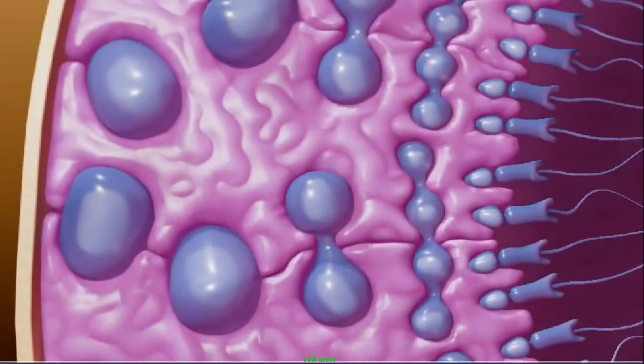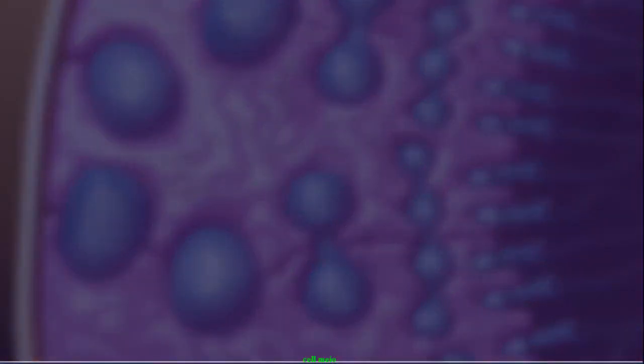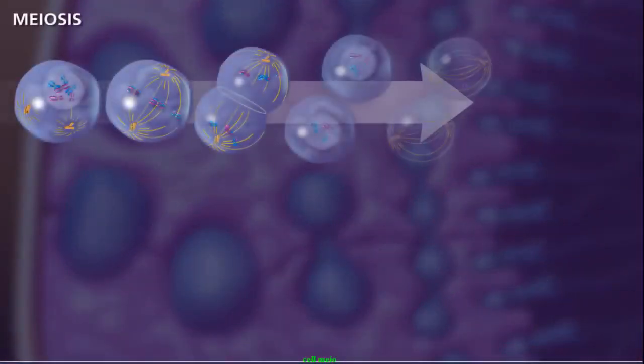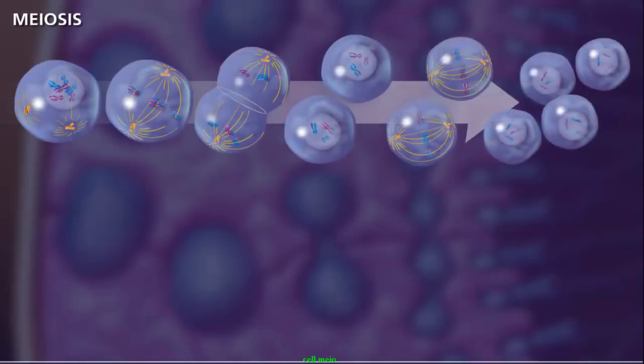Meiosis occurs in special cells called germ cells within the gonads of males and females. For the successful reduction in the number of chromosomes to occur in the new haploid daughter cells, two rounds of divisions are necessary.